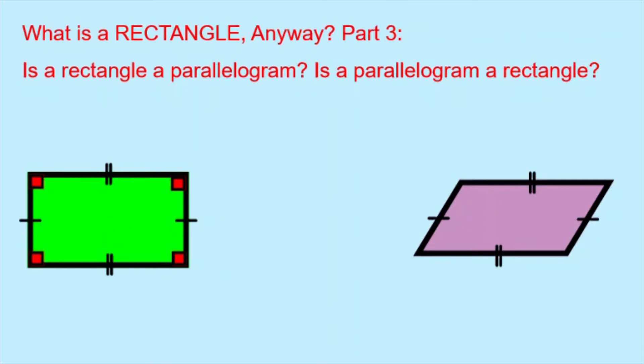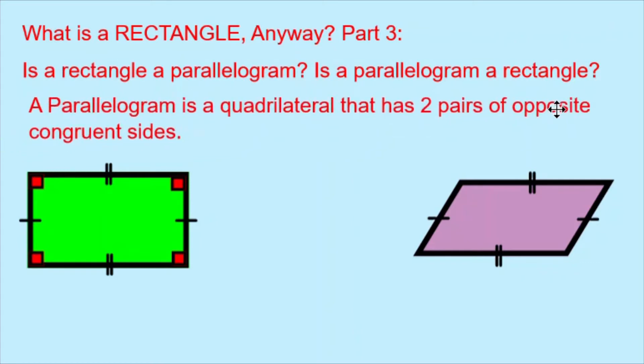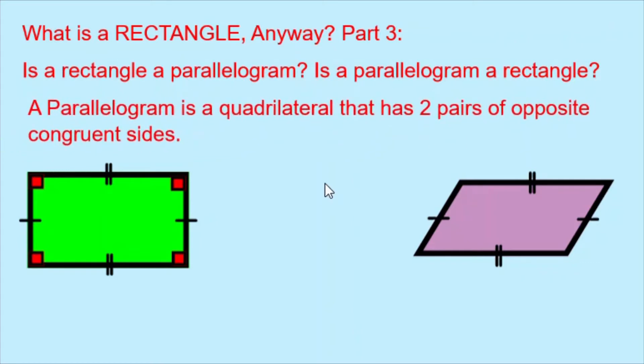Now let's look at the definitions of the two shapes. A parallelogram is a quadrilateral that has two pairs of opposite congruent sides. Both of these shapes are following that rule and in fact all rectangles follow this rule. So therefore all rectangles are also parallelograms.